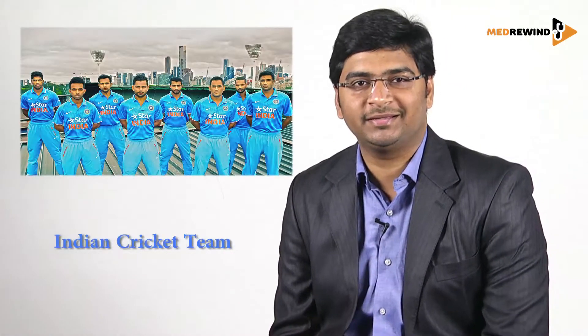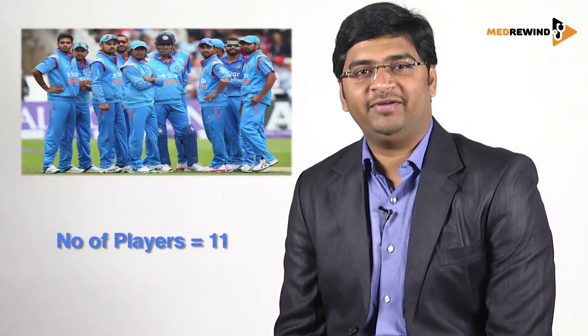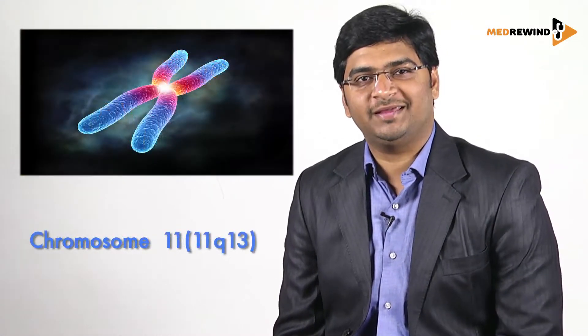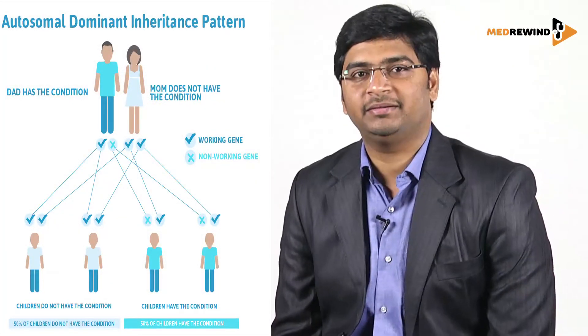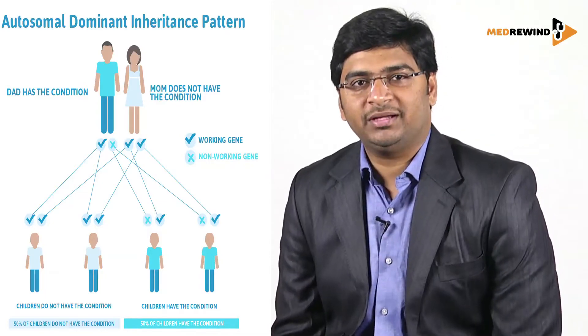The basic thing to remember is MEN. As an Indian, I feel like 'men in blue' is the Indian cricket team, so the number of men are 11. The chromosome number is 11, and it is an autosomal dominant inherited disorder present on the 11th chromosome.